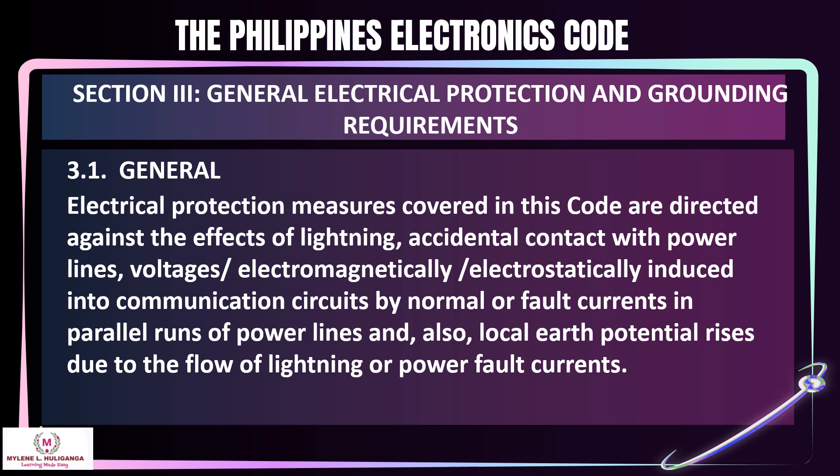Section 3 — General Electrical Protection and Grounding Requirements. 3.1 General Electrical Protection: Measures covered in this code are directed against the effects of lightning, accidental contact with power lines, voltages electromagnetically or electrostatically induced into communication circuits by normal or fault currents in parallel runs of power lines, and also local earth potential rises due to the flow of lightning or power fault currents.